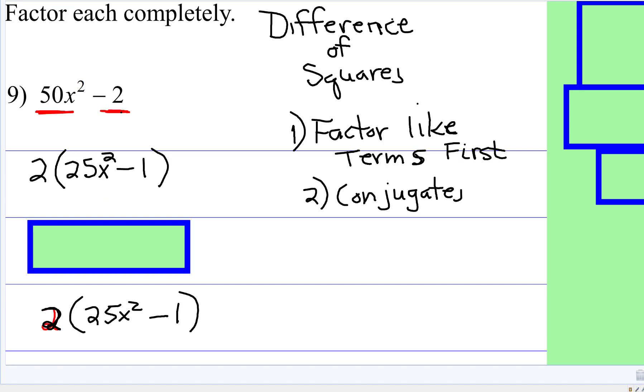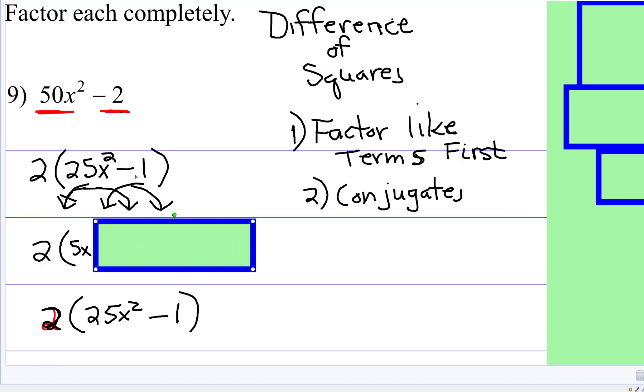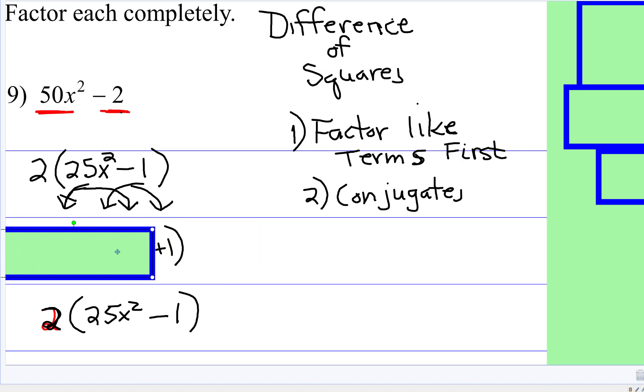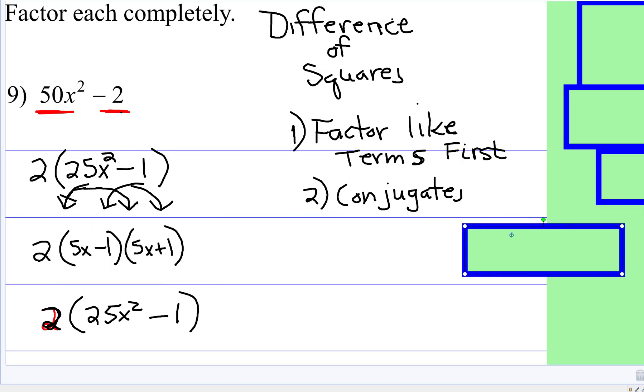So remember, it is the square root of this that will go in the two sets of parentheses, and the square root of this will go into the two sets of parentheses. The square root of 25x² is 5x. The square root of one is one, and you put those in the two sets of parentheses, and there you have your factor.